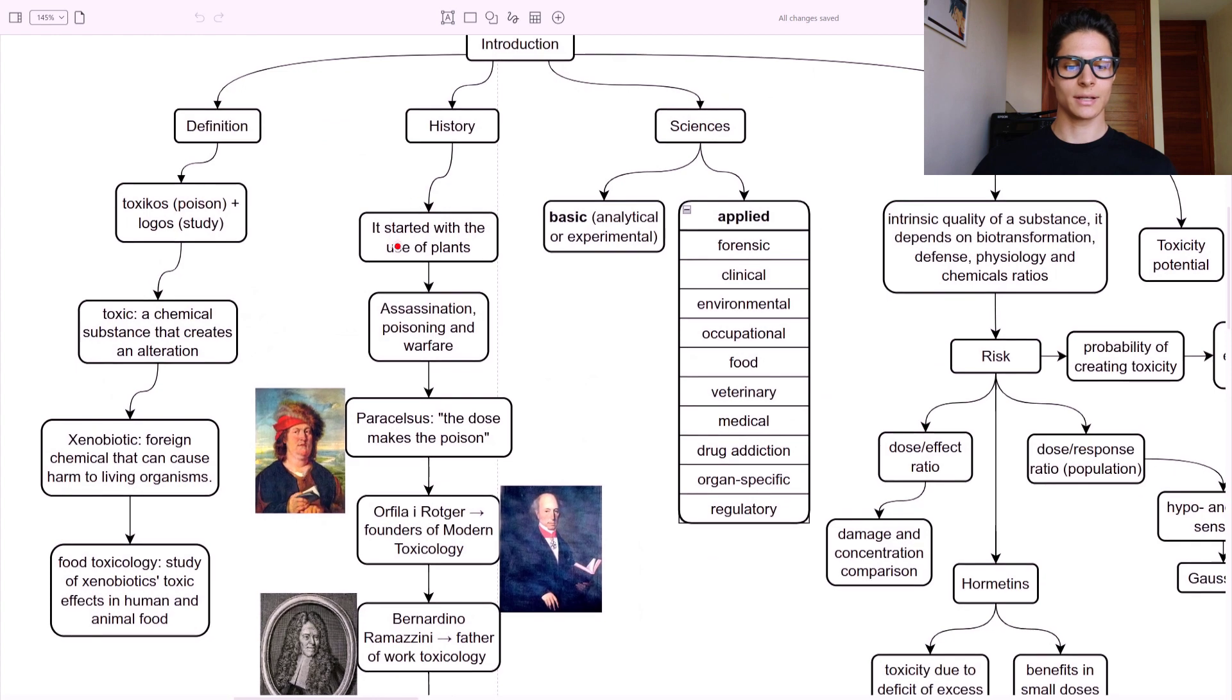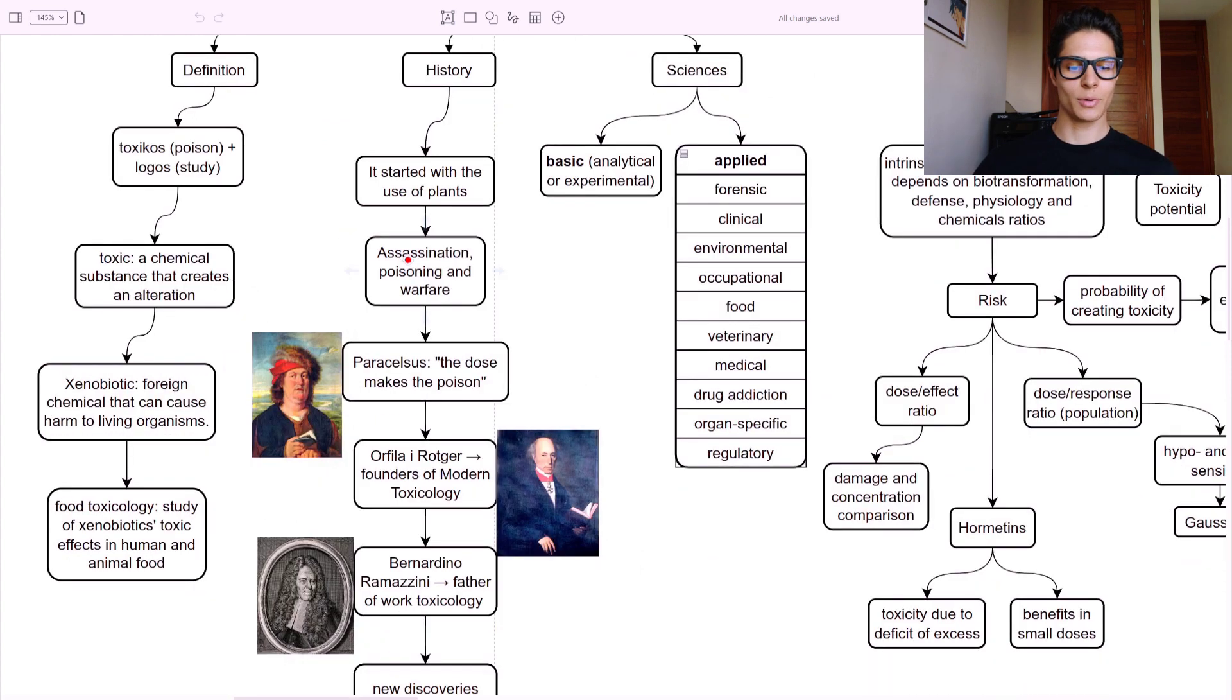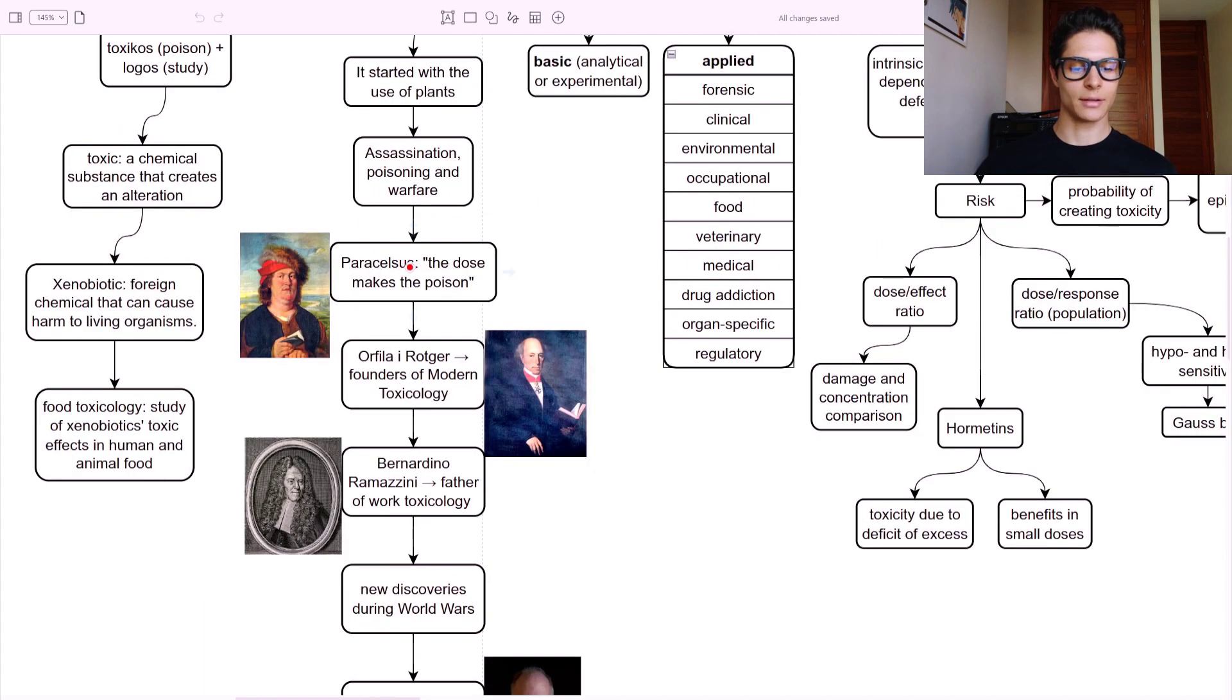The history started with the use of plants, of course. The main reasons were assassination, poisoning, and warfare using toxins and poisons. Paracelsus said the dose makes the poison. This is the main thing to remember from the history of toxicology. Paracelsus - the dose makes the poison.